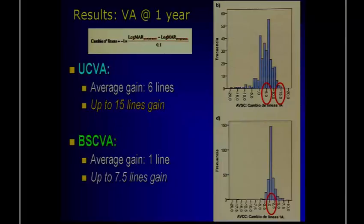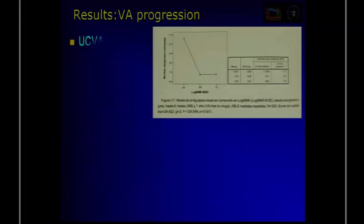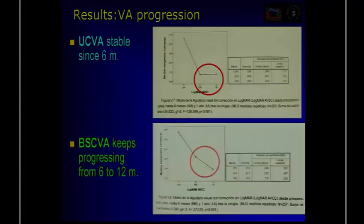You see results in terms of visual acuity. There is a six-line increase, up to 15 lines according to LogMAR. This is the formula we applied to translate LogMAR into lines. You see the best corrected visual acuity and the visual acuity progression — without correction and corrected. This is a group of over 500 cases followed up for at least one year, and BSCVA keeps progressing.